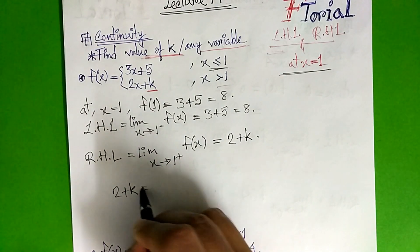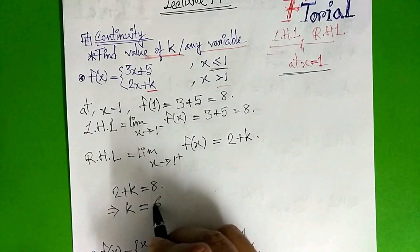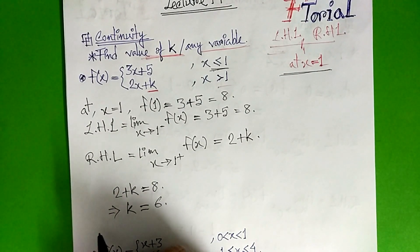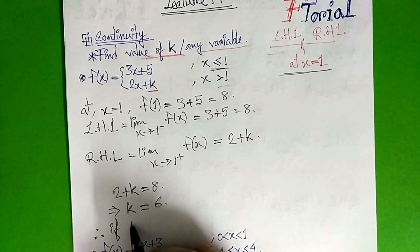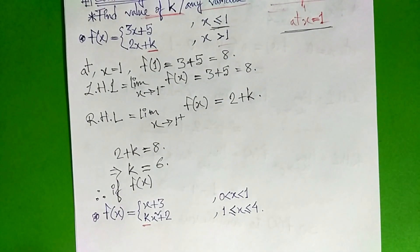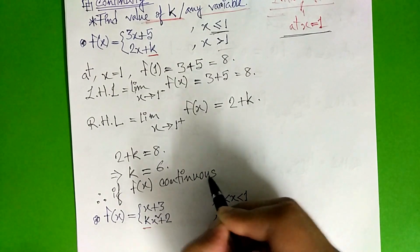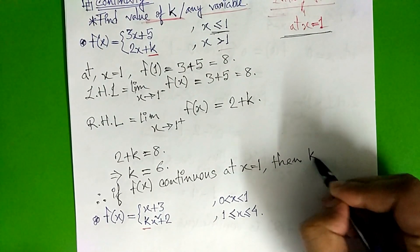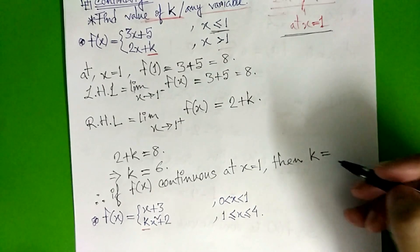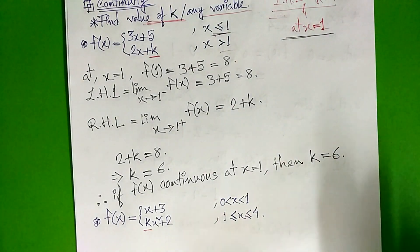It is a continuous function at x equals 1, so left hand limit equals right hand limit. So 2 plus x equals 8, then k equals 6. So k will be 6. If f(x) is continuous at x equals 1, then k equals 6 and the answer is k equals 6.